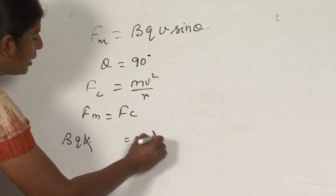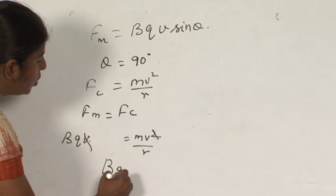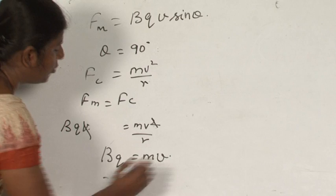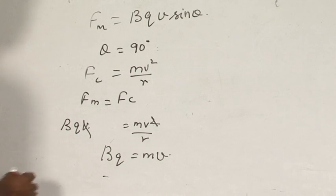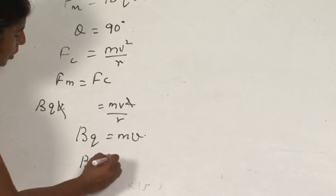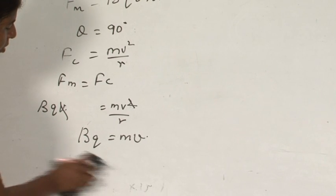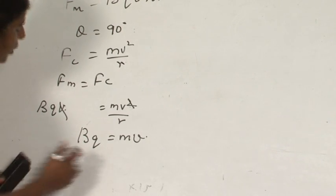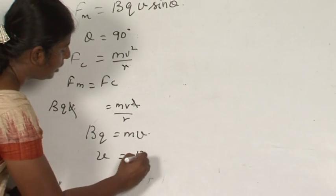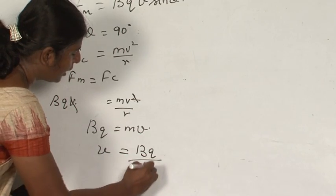V cancels from both sides, giving BQ equal to MV by R, or we can write V equal to BQR/M, or equivalently BQ by M.